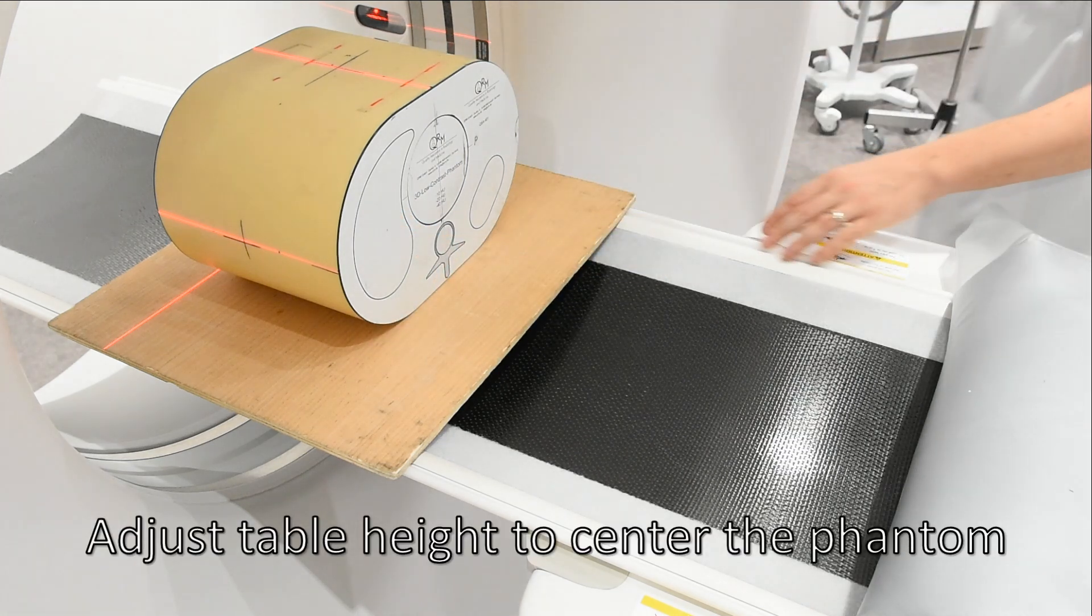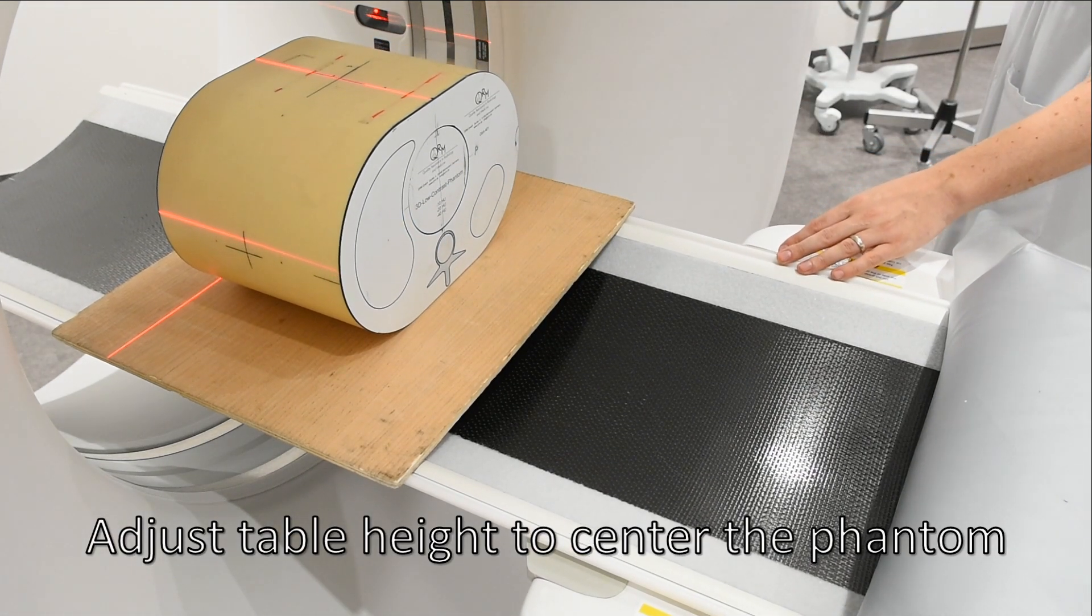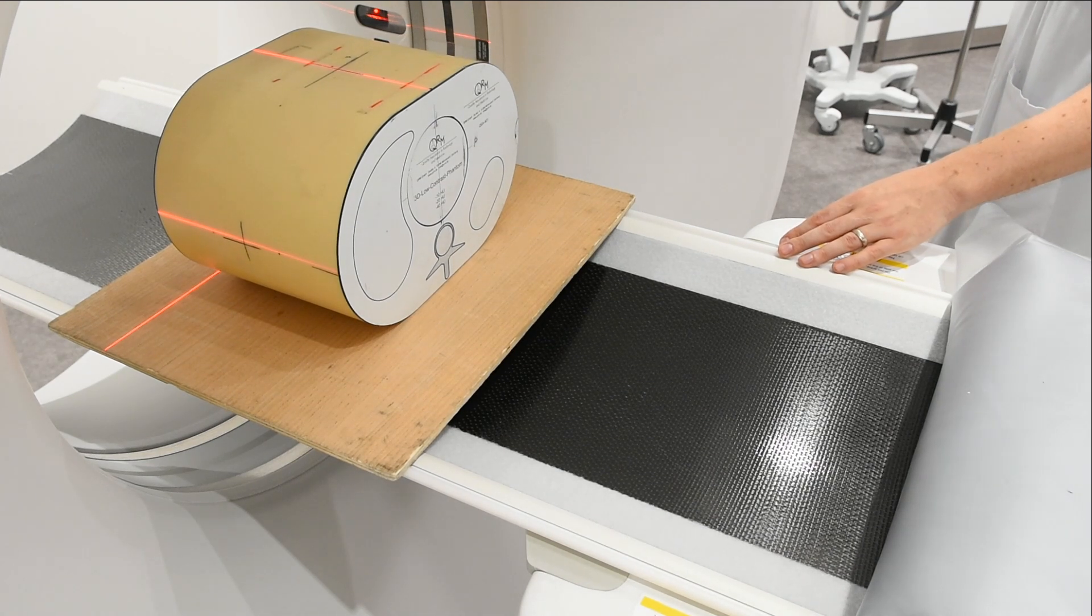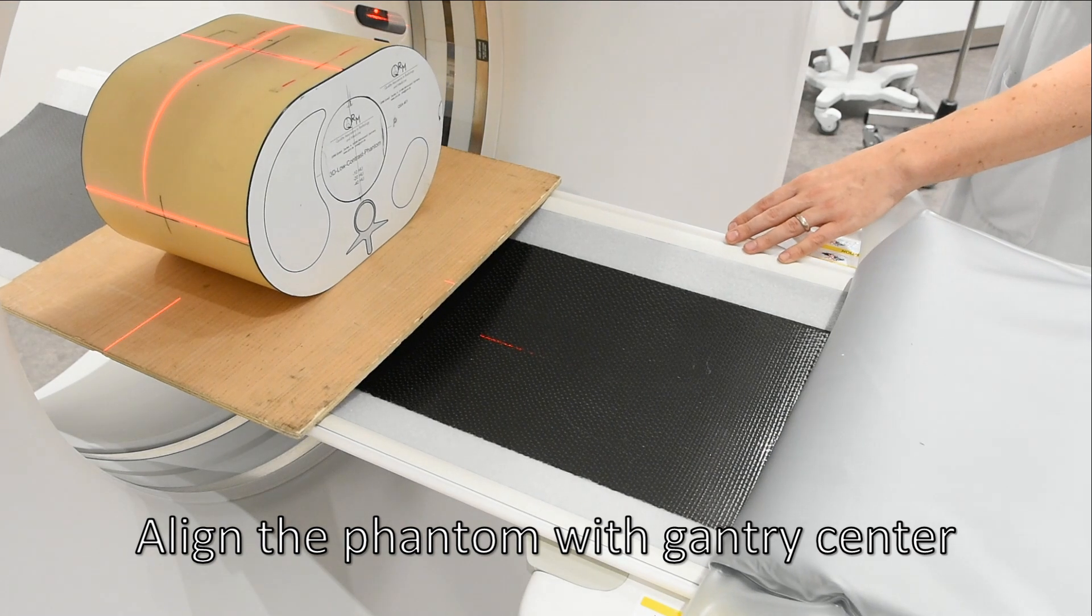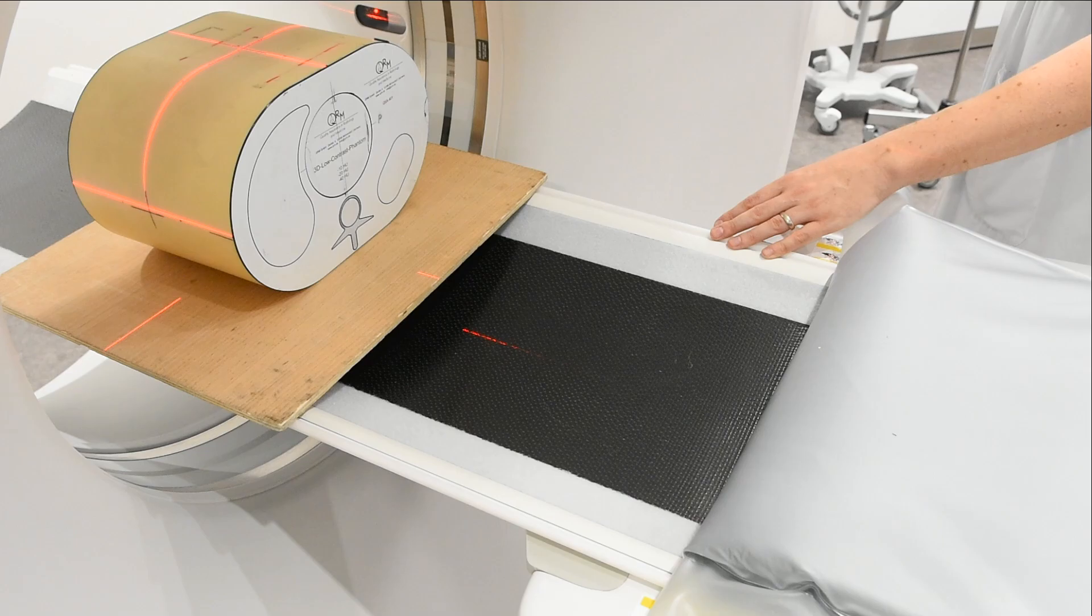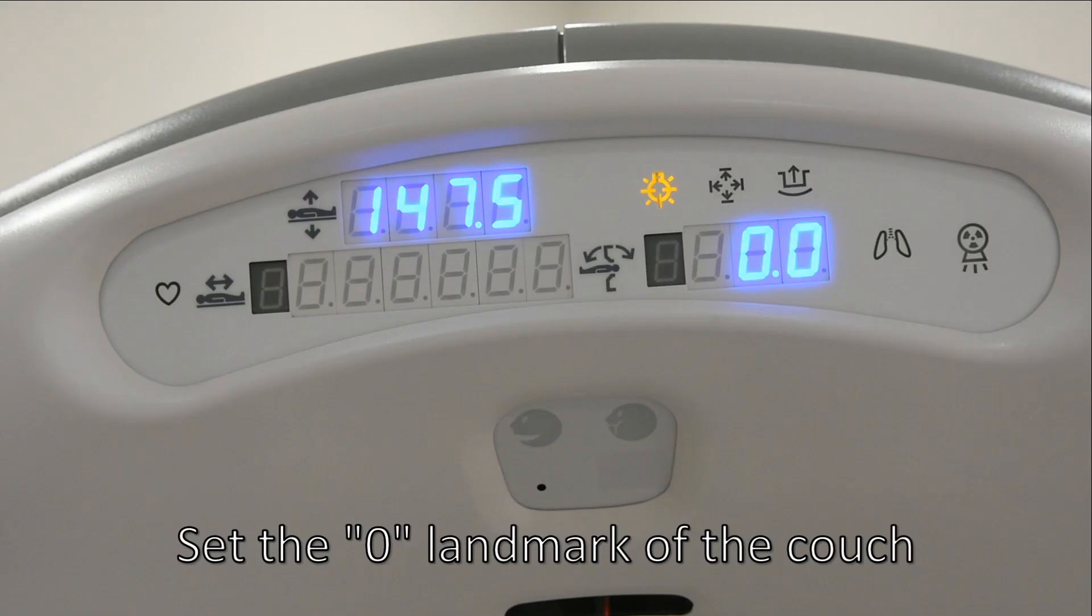Adjust table height to center the phantom. Align the phantom with gantry center. Set the zero landmark of the couch.